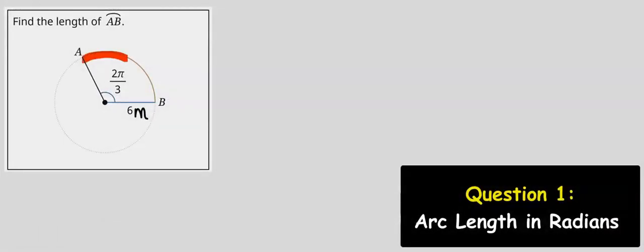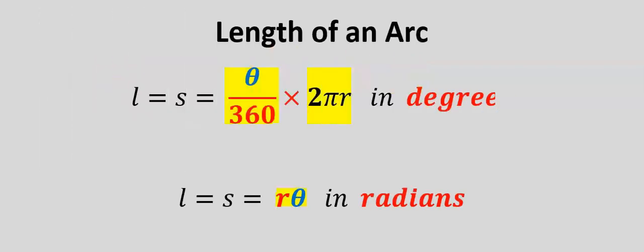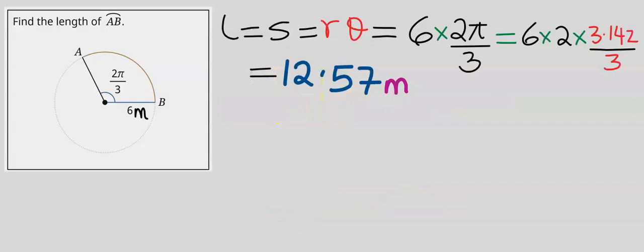Let's find the length of this arc. Step number one: consider the central angle. Here the central angle is in radians. Next, for the length of an arc in radians, we're going to choose the right formula. If you substitute carefully, the length of the arc is 12.57 meters.